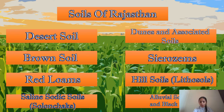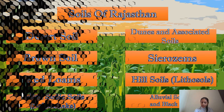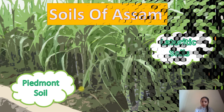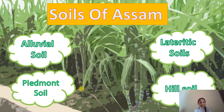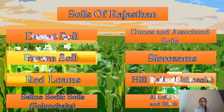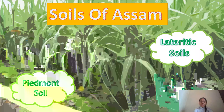The soils found in Assam are: alluvial soil, laterite soil, pediment soil, and hill soil. We should remember that hill soil was also found in Rajasthan.